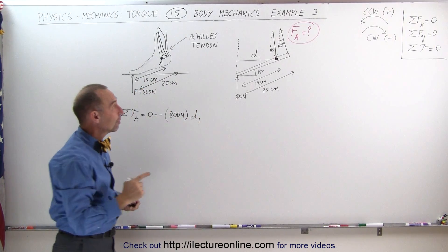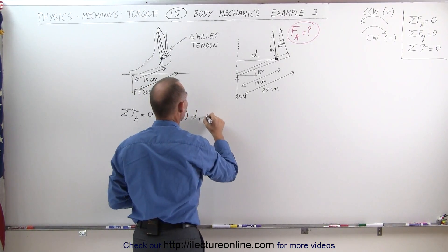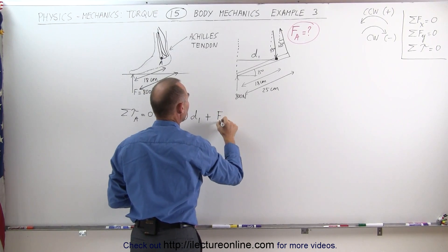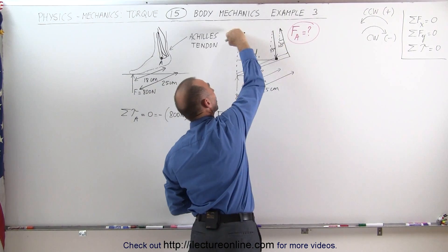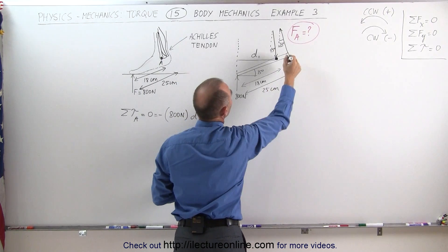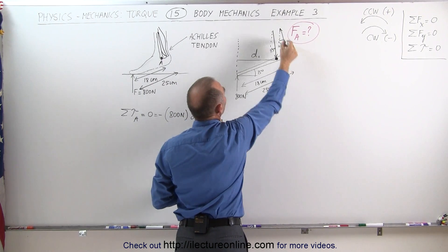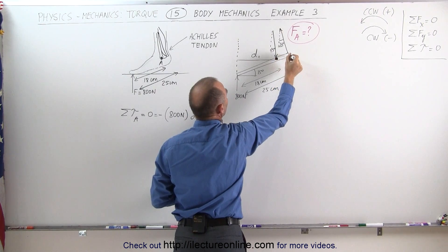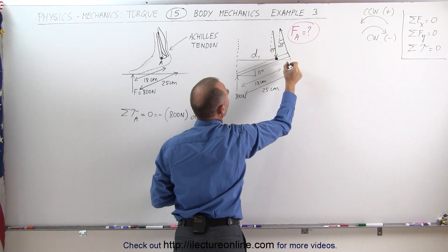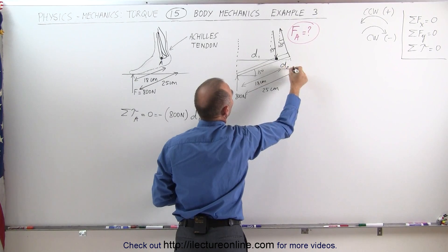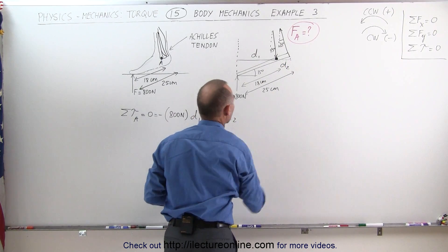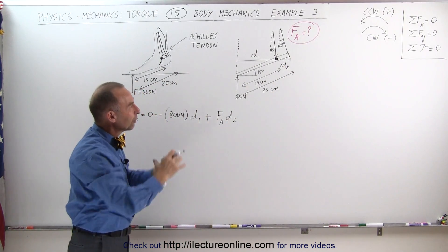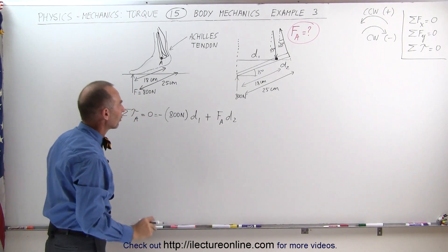Now we have the force of the Achilles tendon that would be plus the force of the Achilles tendon because this will cause a counterclockwise torque, that's a positive torque, times the perpendicular distance from the line of action of the force to the pivot point that would be right here, so that's the distance that we're looking for and this would be distance two. I know that's kind of small right there but we'll draw a little bit bigger so you can see what that looks like.